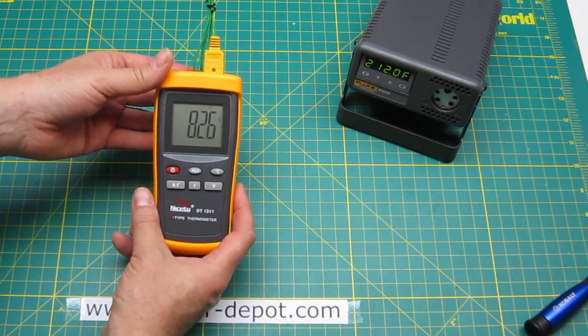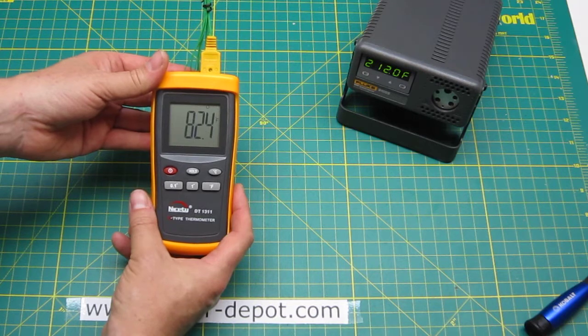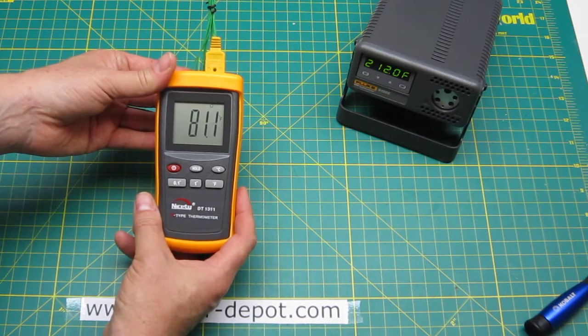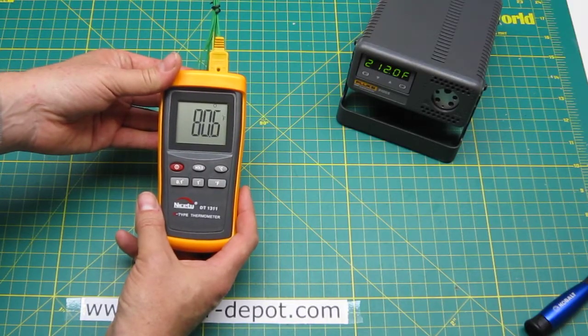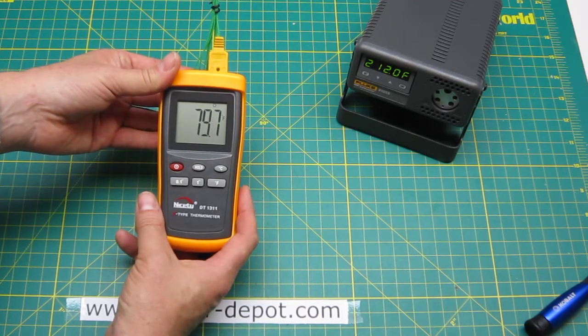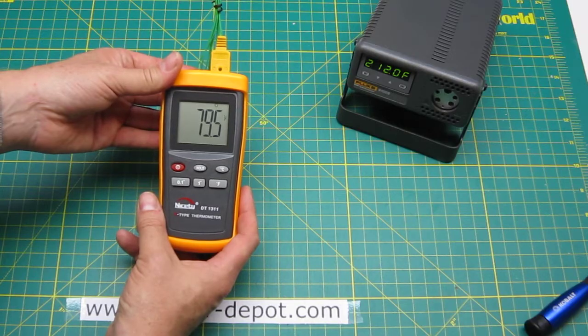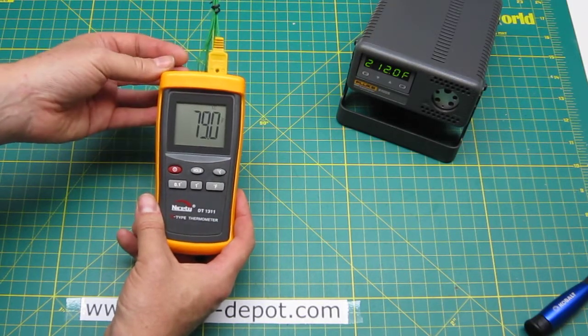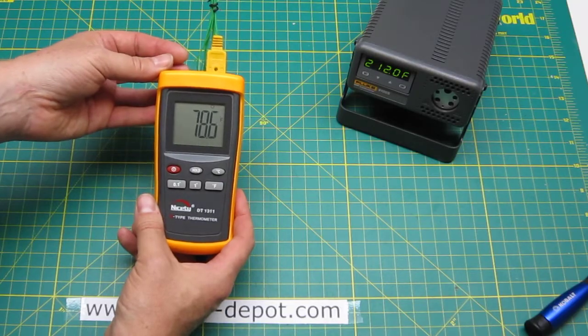The great thing about this meter is that it is a full-scale K-type thermometer. That means it can measure as low as minus 328 degrees Fahrenheit and up to 2498 degrees Fahrenheit and that's the full range that a K-type thermocouple can do.